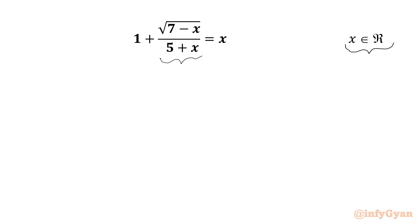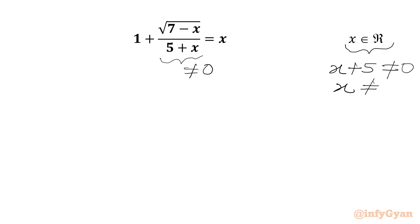The denominator cannot be 0, so I will write here x plus 5 cannot be 0. Therefore x cannot be equal to negative 5.